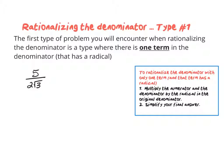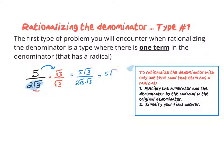Here's another example that is still type one because there's only one term in the denominator. We multiply the numerator and the denominator by whatever the radical was — here the only radical is root 3, so I multiply by root 3. On top, 5 times root 3 is 5 root 3. On the bottom, 2 root 3 times root 3 is 2 times 3, which is 6. So we get 5 root 3 over 6.